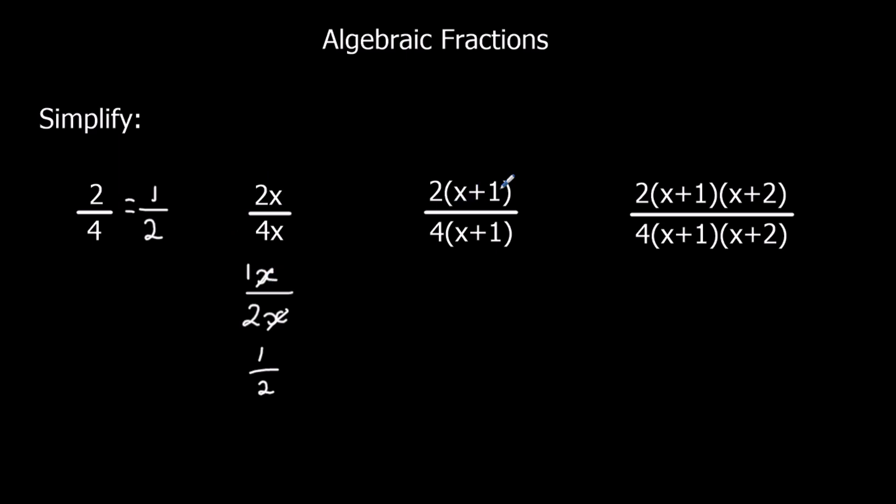Here I've got x plus 1 and x plus 1. So I can divide the top and bottom by x plus 1. So that will cancel them out, and I'll get 2 over 4. And if I divide top and bottom by 2, I'll get 1 over 2. And finally here, I can divide top and bottom by x plus 2, divide top and bottom by x plus 1, and half the top and the bottom again. So all of these fractions here are the same, and they just mean half.